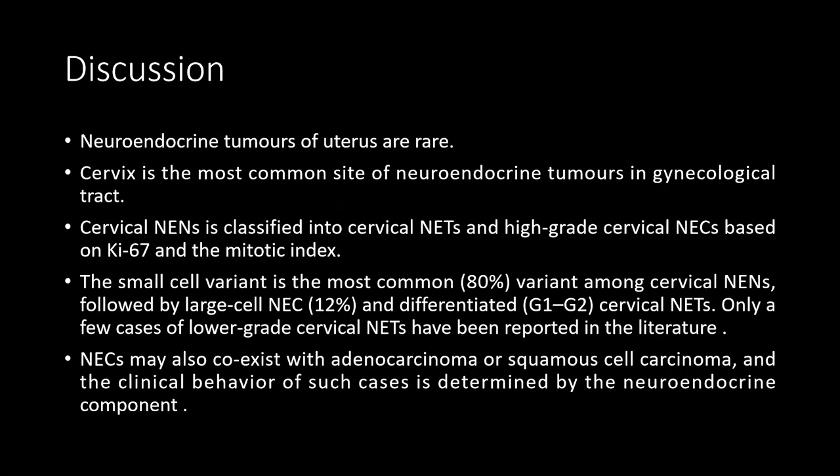Coming on to discussion. Neuroendocrine tumors of the uterus and cervix are quite rare. One of the common sites of neuroendocrine tumors in the gynecological tract is the cervix. These cervical neuroendocrine neoplasms are classified into cervical neuroendocrine tumors and high-grade cervical neuroendocrine carcinomas based on the Ki-67 and the mitotic index. The small cell variant is the most common, roughly about 80% among the cervical neuroendocrine neoplasms, followed by large cell variant as in our case, and differentiated cervical neuroendocrine tumors. Only a few cases of low-grade cervical neuroendocrine tumors have been reported in the literature. Neuroendocrine carcinomas may also coexist with adenocarcinomas or squamous cell carcinoma, and the clinical behavior of such cases is determined by the neuroendocrine component.